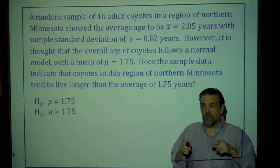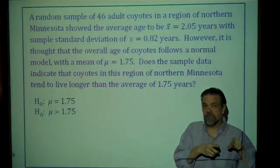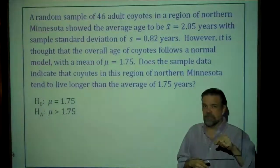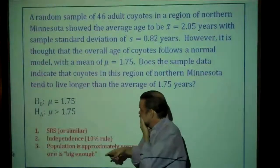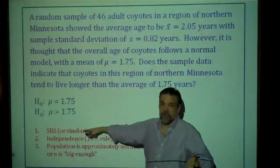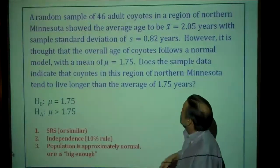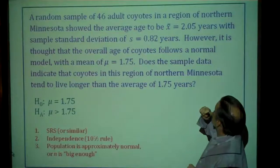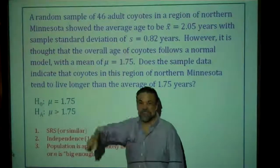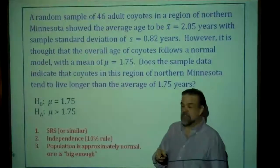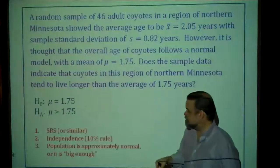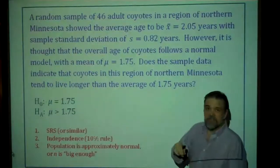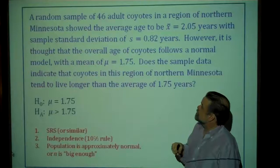Just like when we tested proportions by looking at the sampling distribution of the sample proportion, we're going to look at the sampling distribution of the sample mean. But first we have to check our conditions and assumptions. We need a simple random sample — and indeed the problem states a random sample. For independence, the 10% rule: 46 is less than 10% of all coyotes in this region.